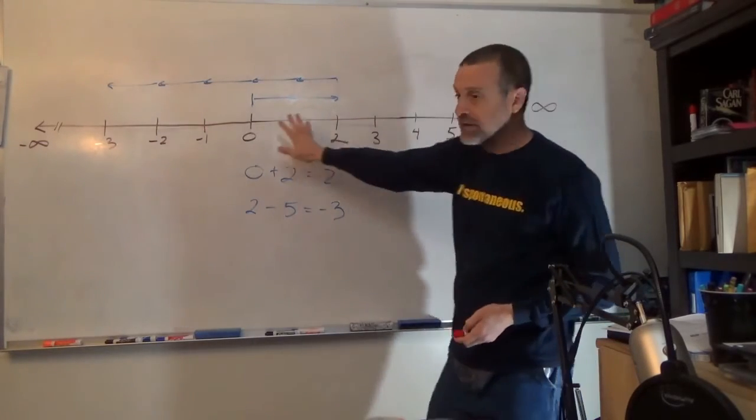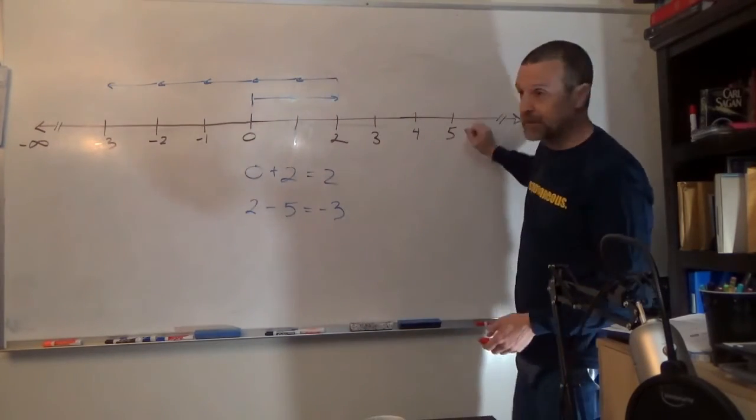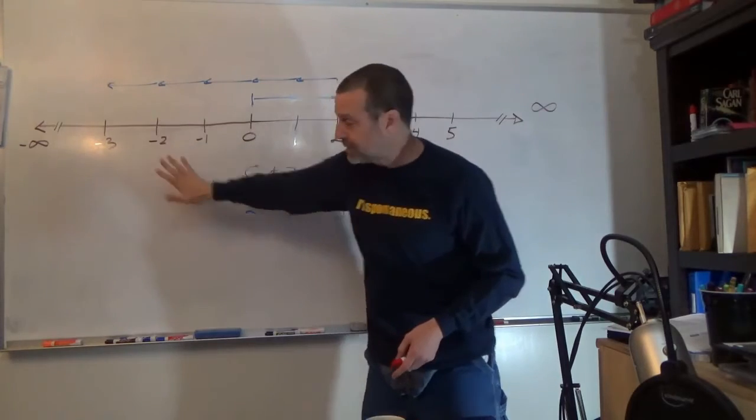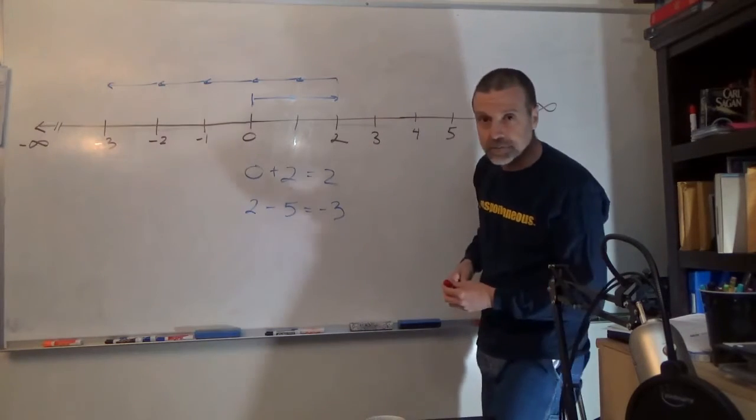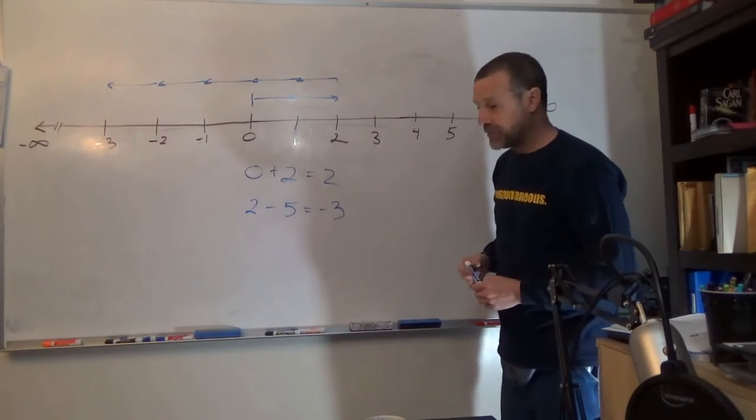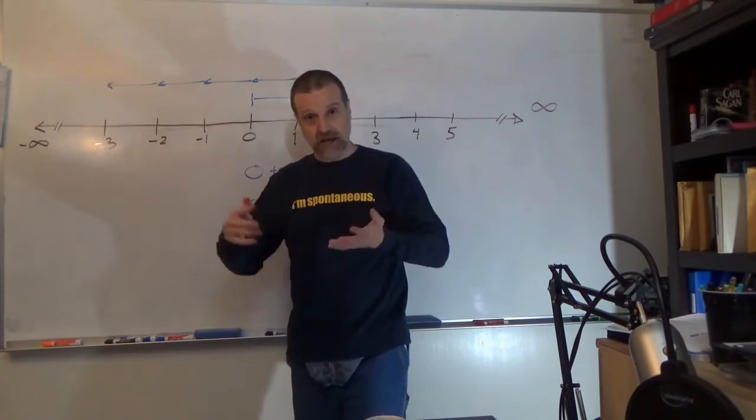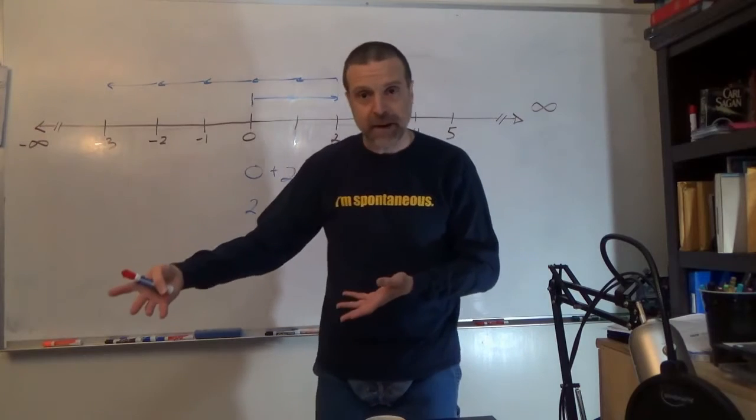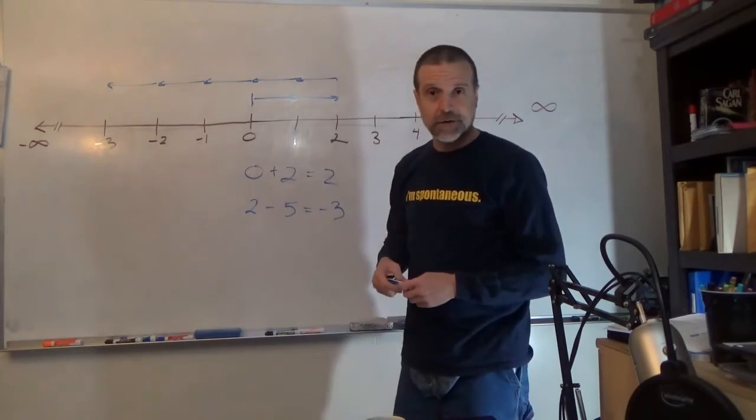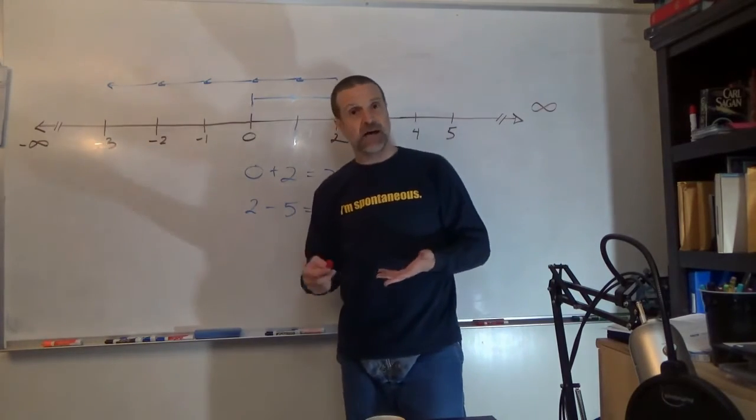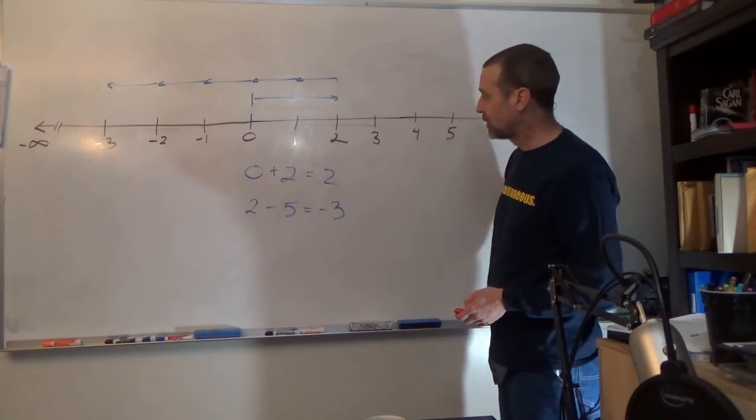So the number line is a way of visualizing our numbers and recognizing that we have positive numbers and negative numbers. And these are really useful. And you'll see this in the future, how useful negative numbers are. They're also real. I mean, by that, I mean you can certainly have negative quantities. Like, for example, if you borrow money from the bank, well, then you owe the bank money. So you have negative money in the bank. So we use negative numbers all the time in real life.